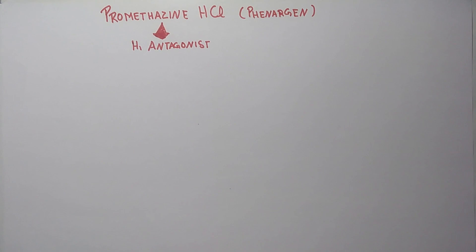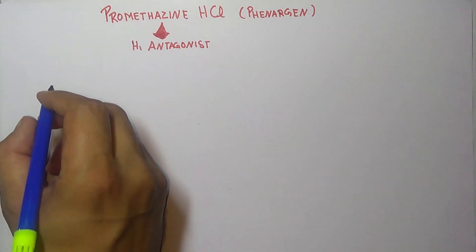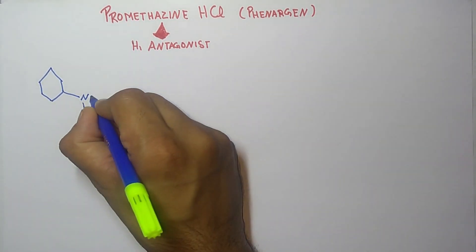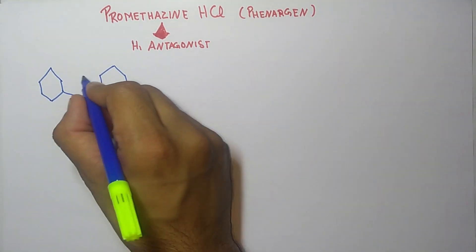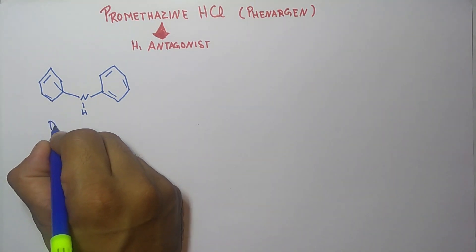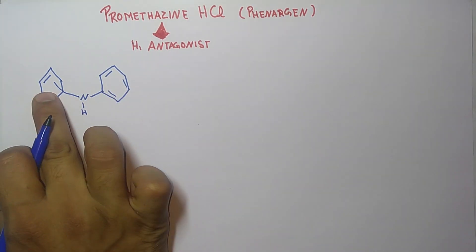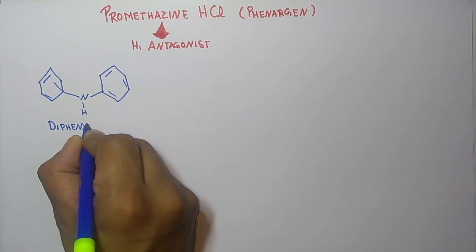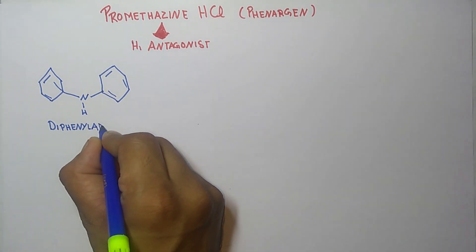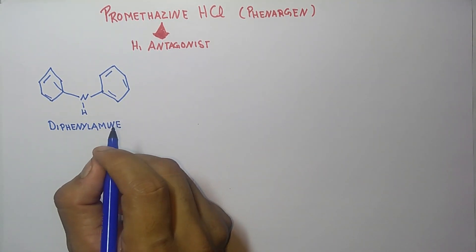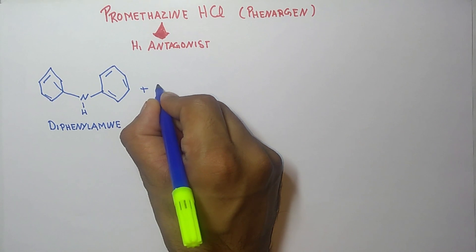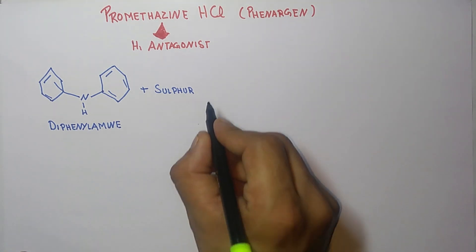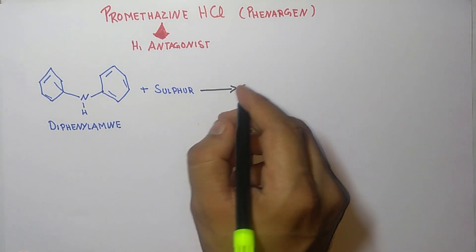The starting material is diphenylamine. It is named diphenylamine because there are two phenyl rings — this one and this one. In presence of sulfur with the help of I2 and AlCl3,